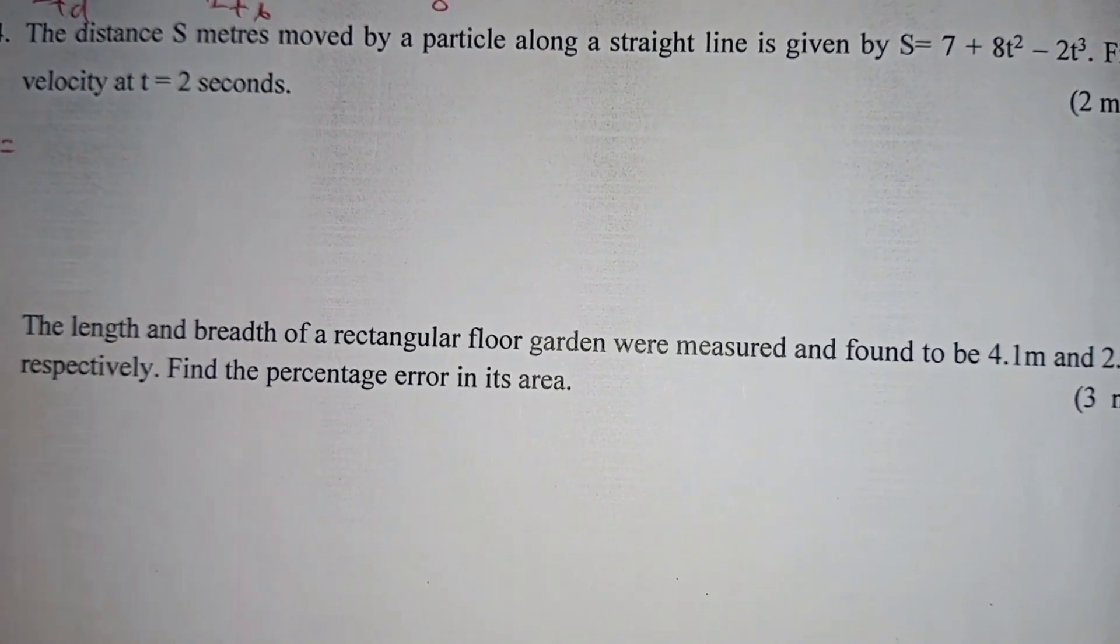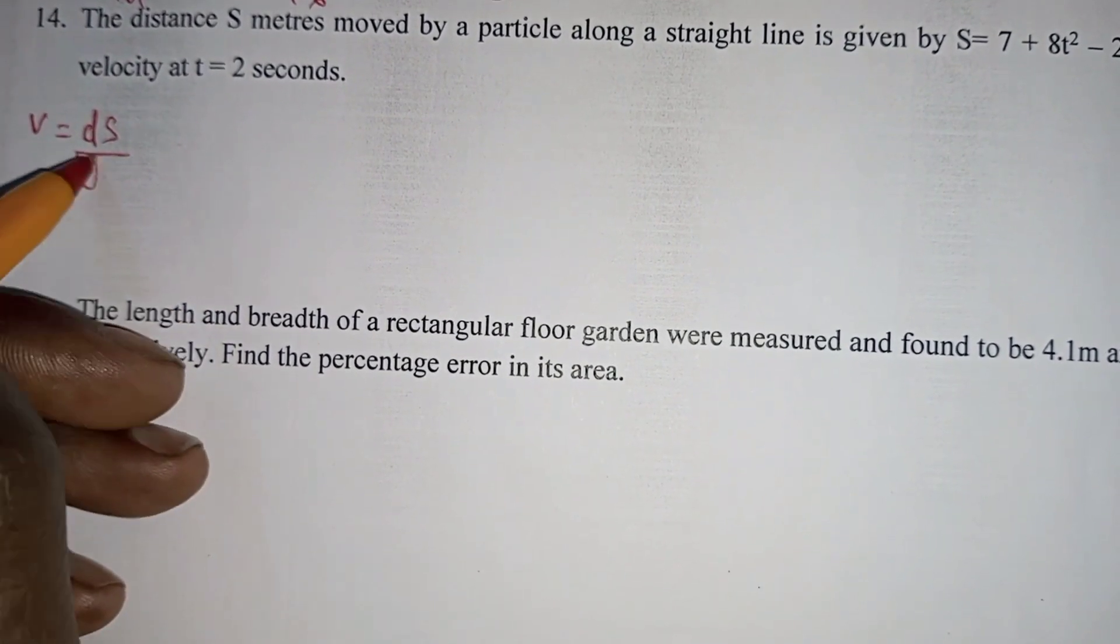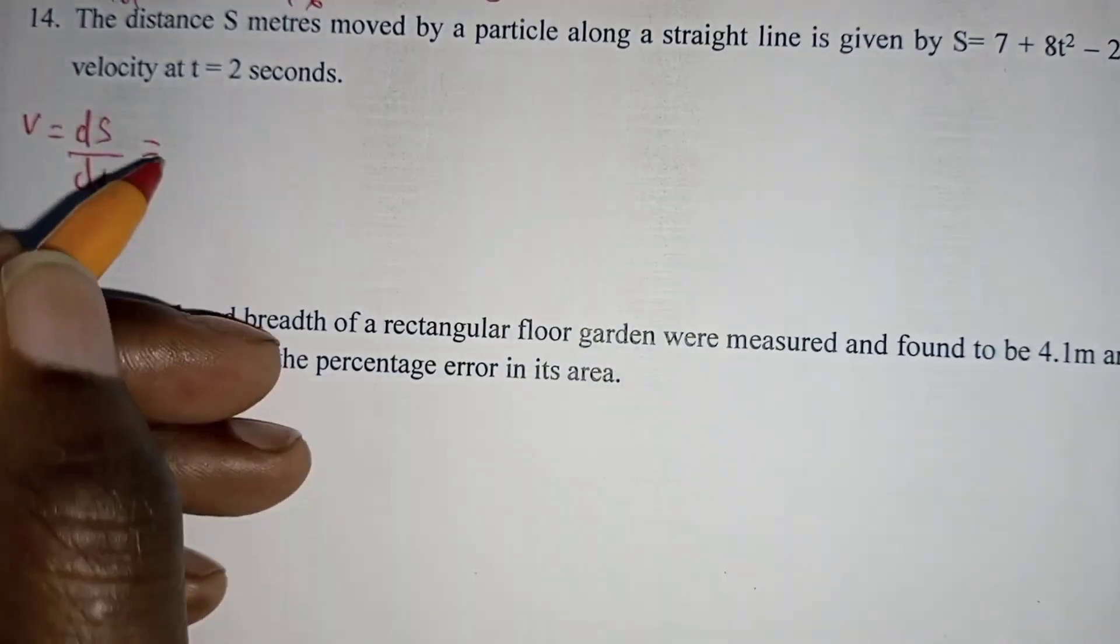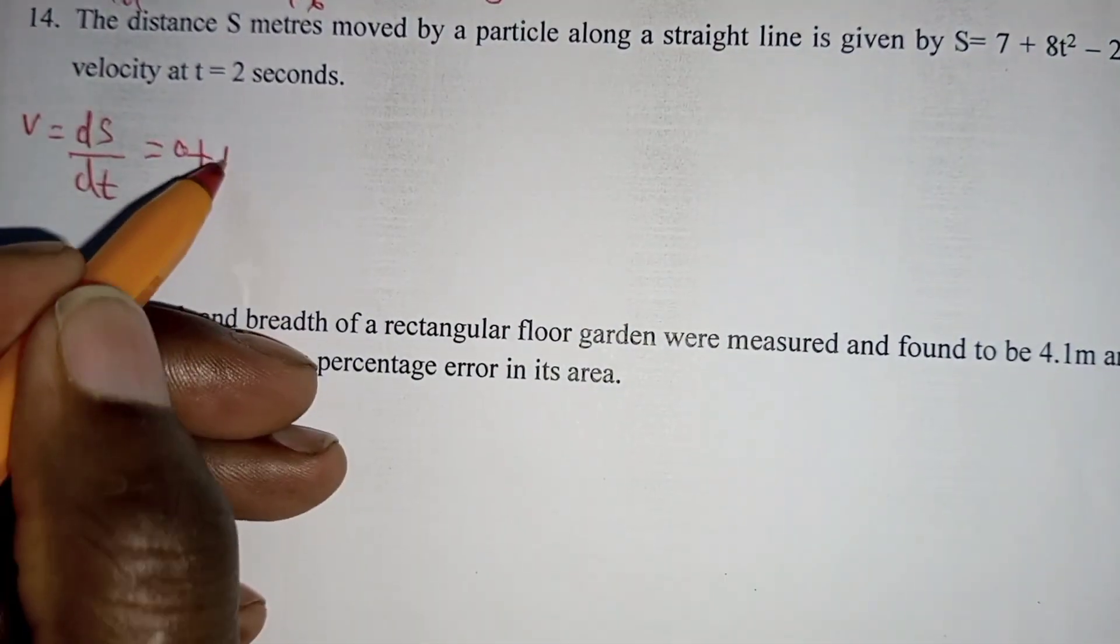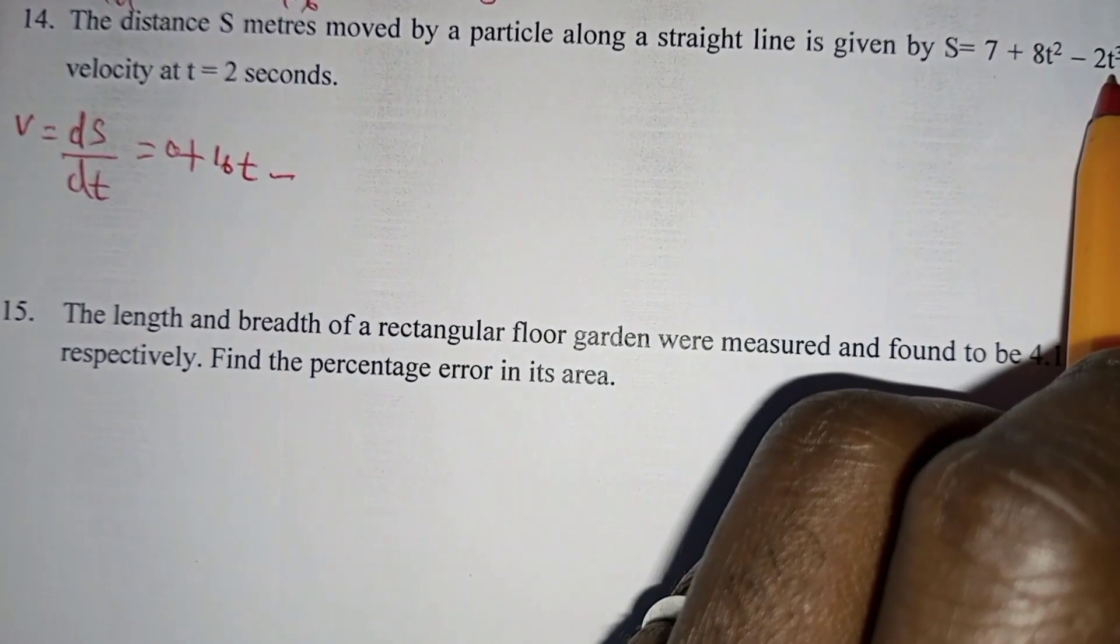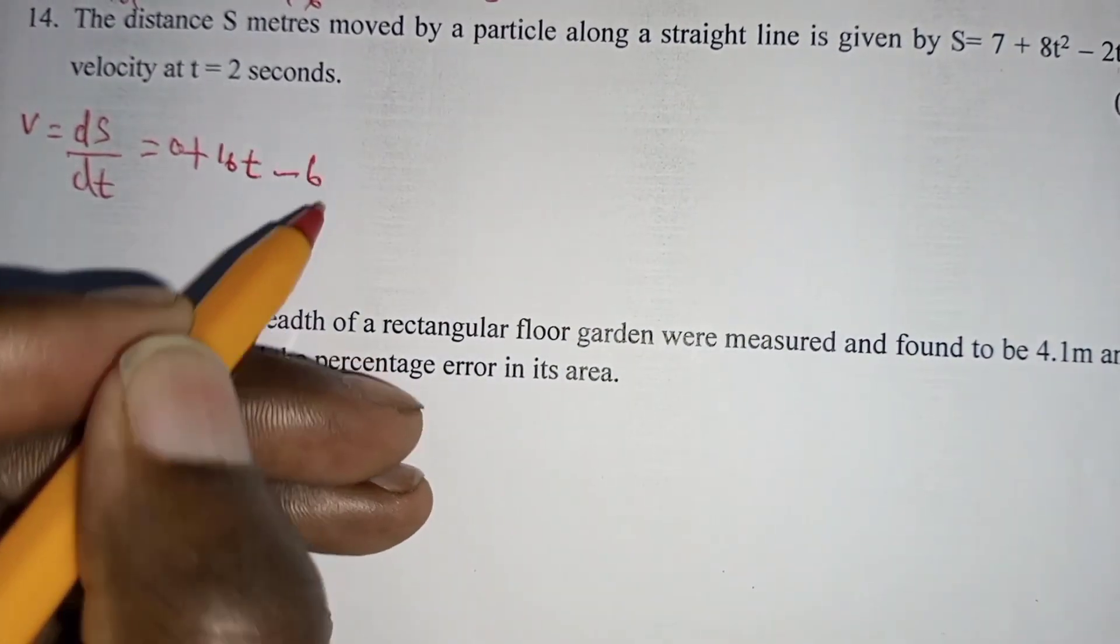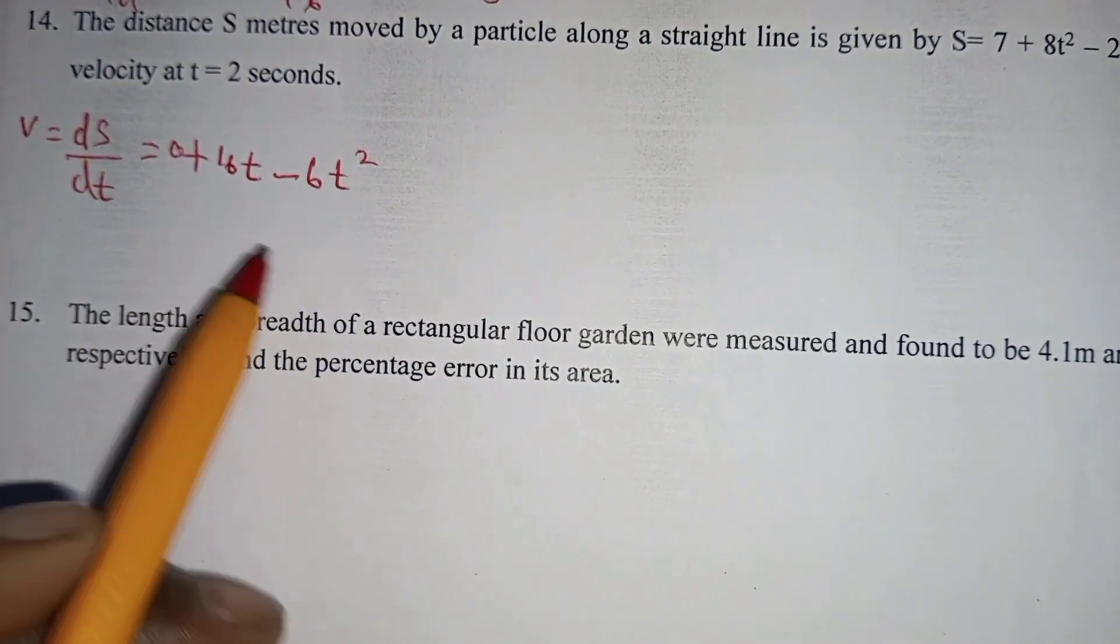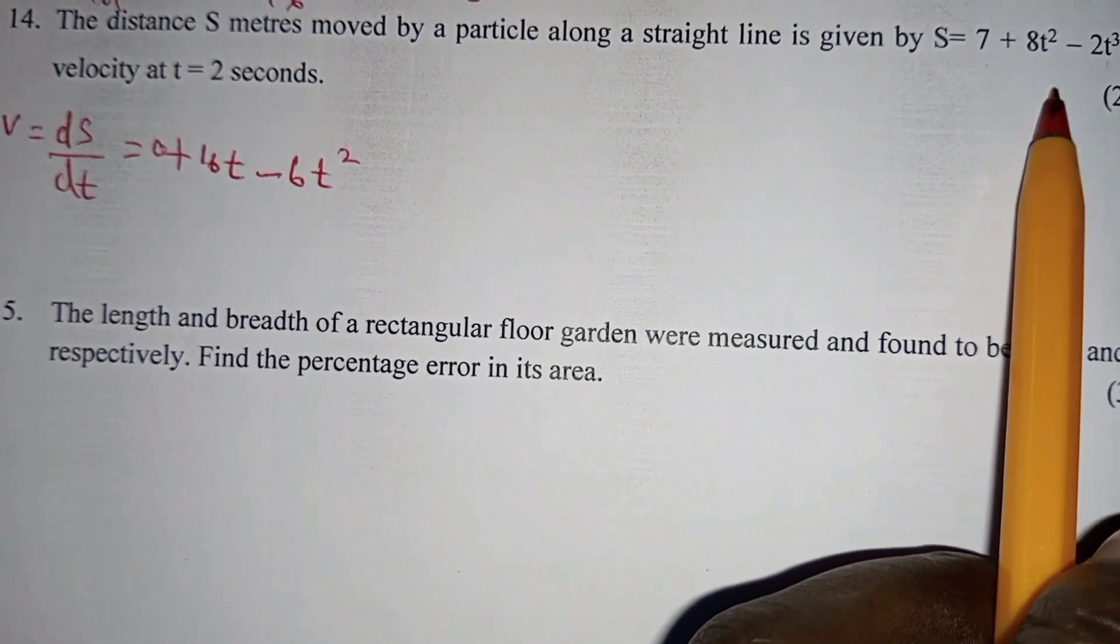Velocity is given by differentiating displacement with respect to time. In differentiating, this 7 differentiated will give you 0, plus 8t squared differentiated will give you 16t, minus when you differentiate 3t cubed will give you minus 6t squared. This is the velocity equation after differentiating this one. We differentiate it term-wise because this is a polynomial.